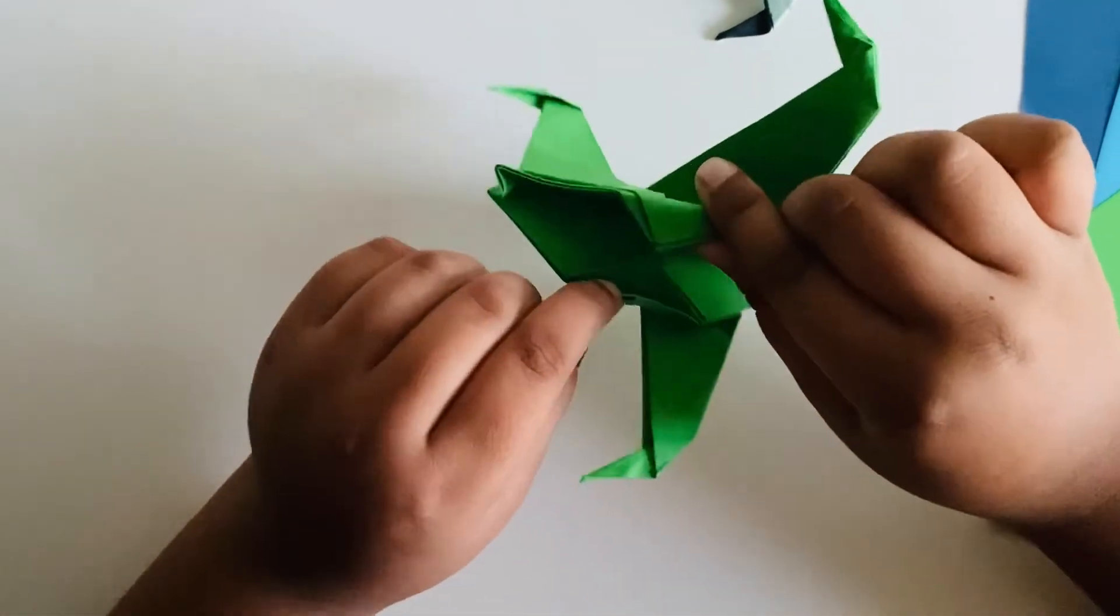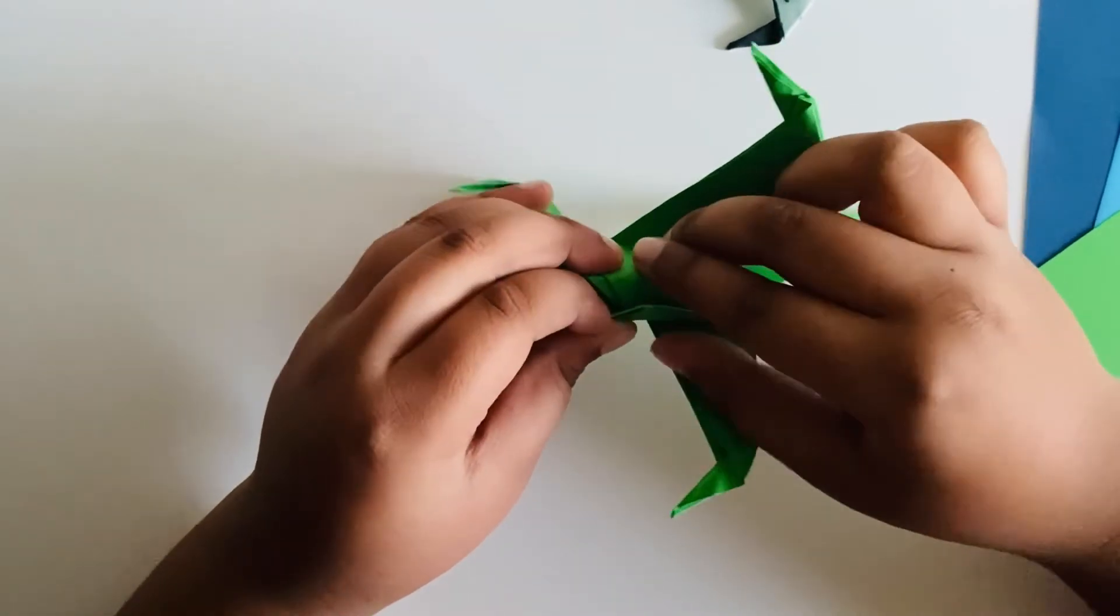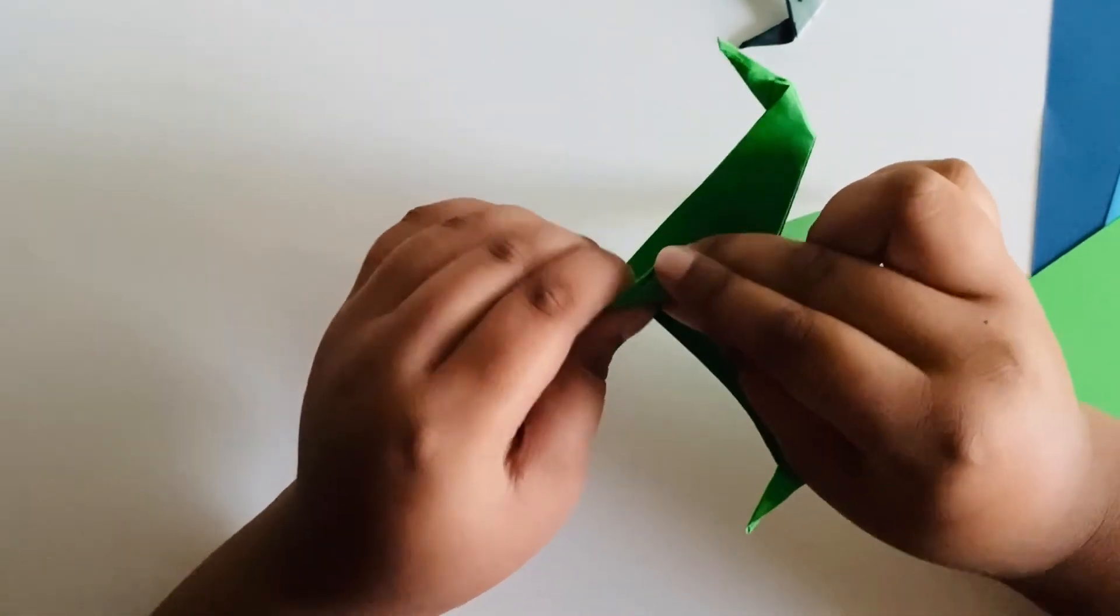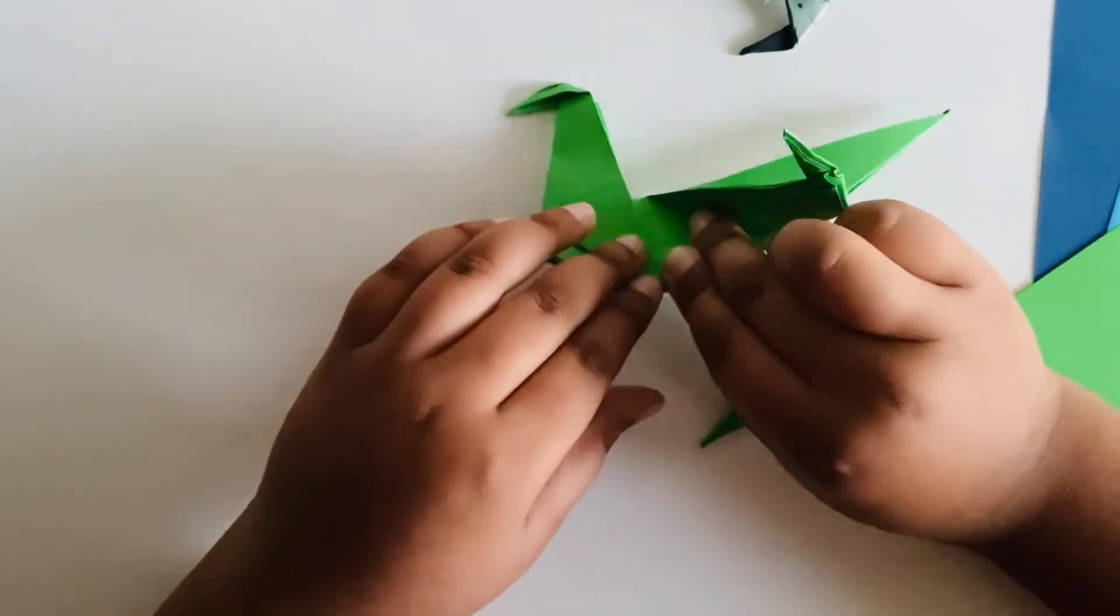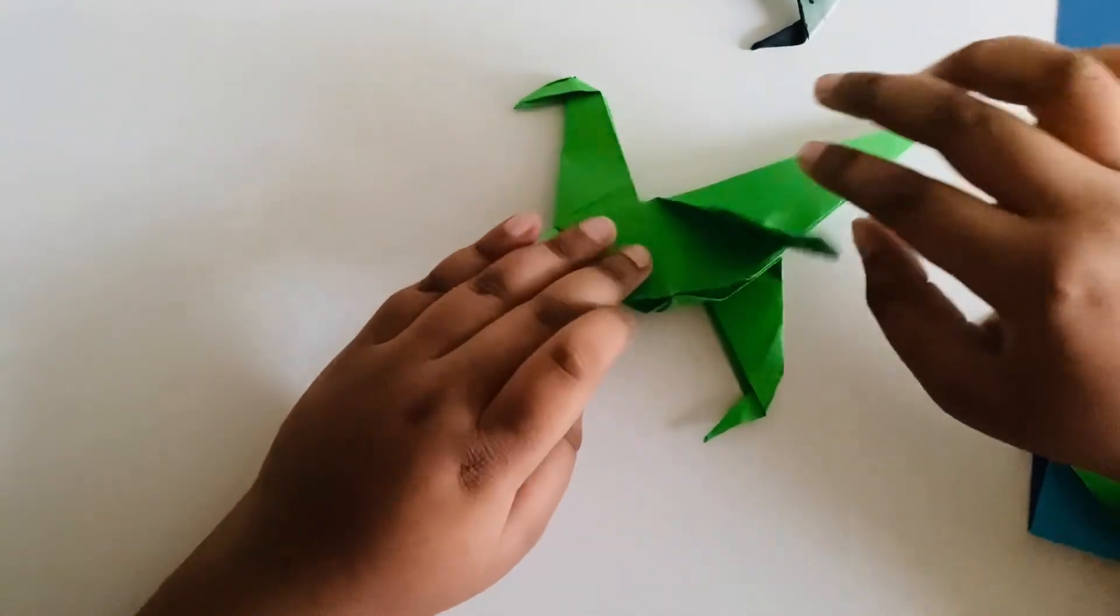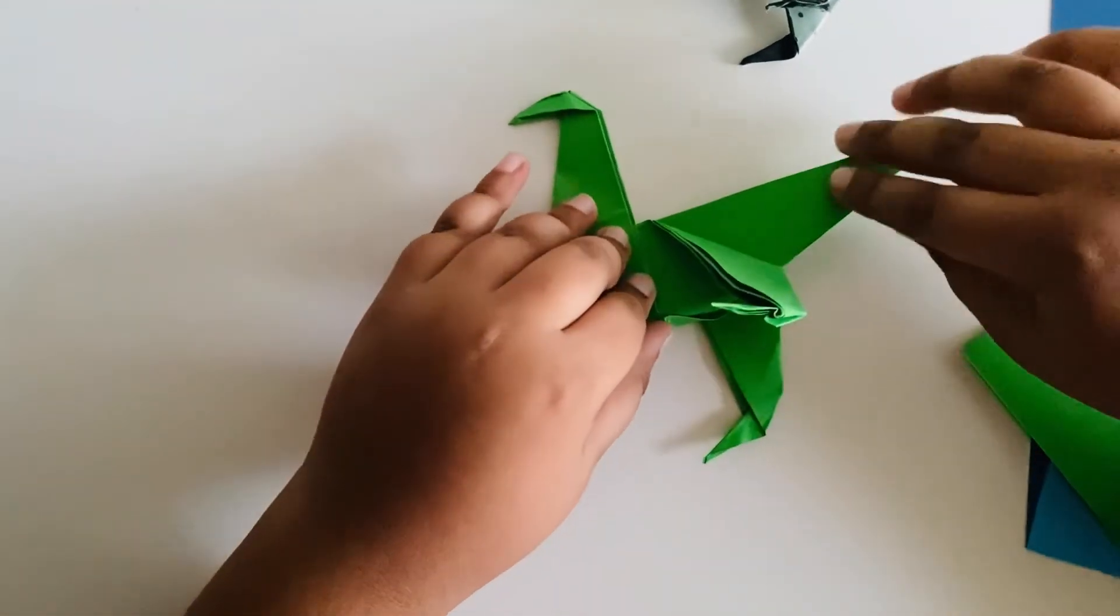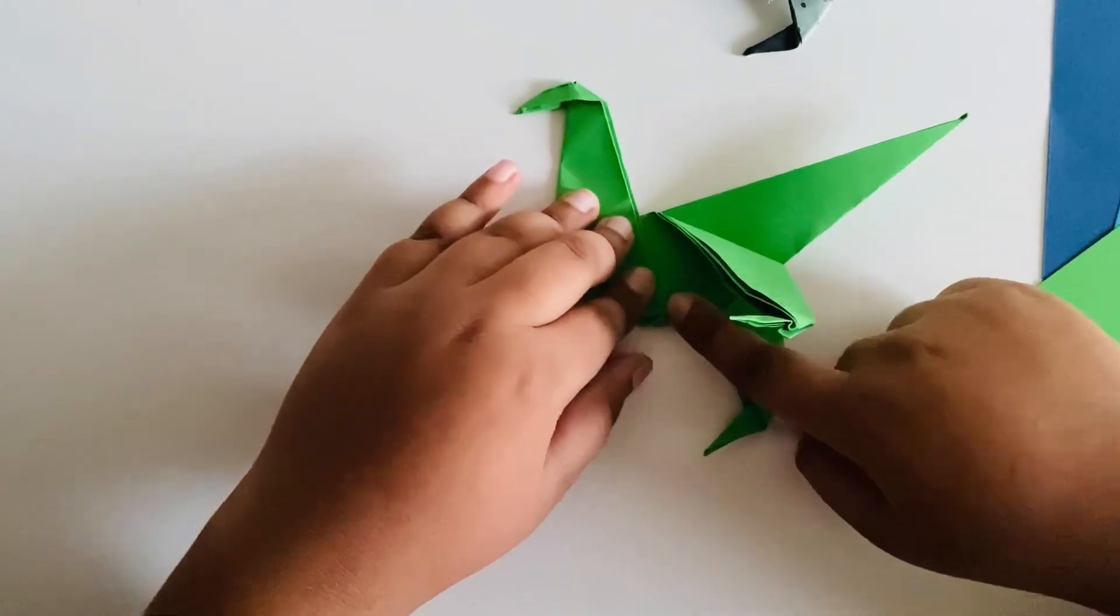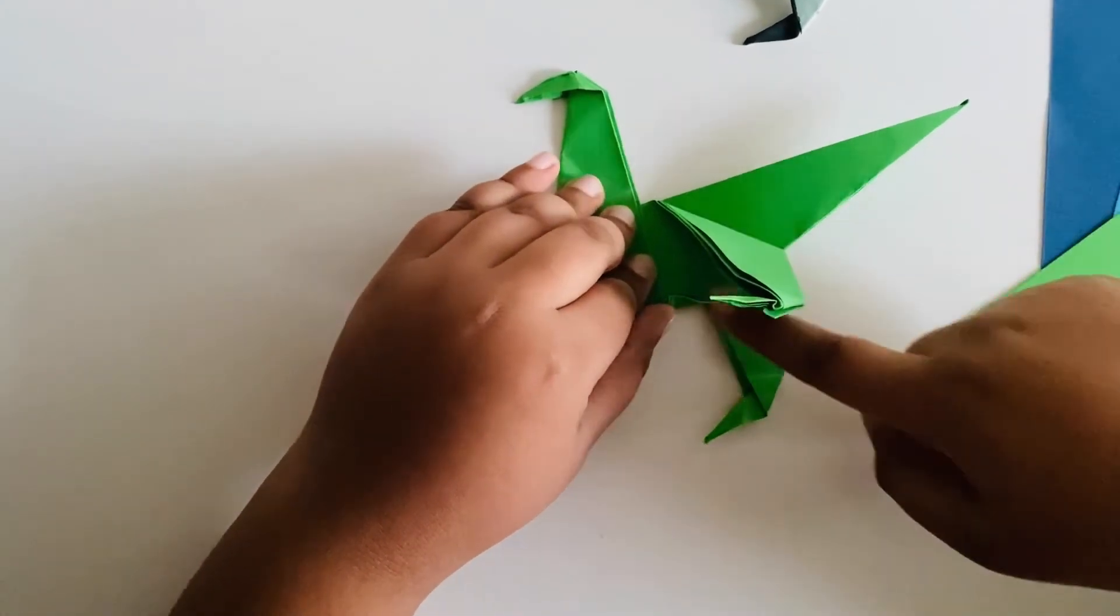Then since there will be two lines in each you need to fold it in like that. Usually you don't have to do this or else you can just paste the legs together.